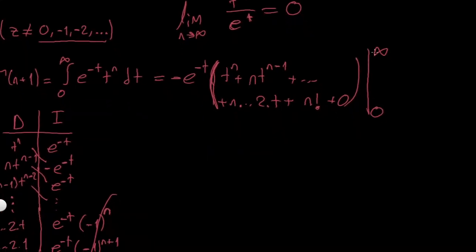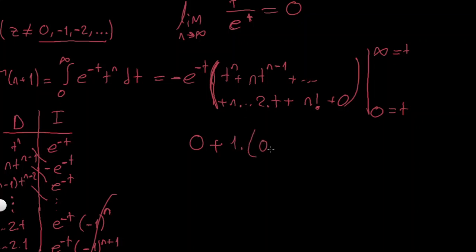If I put t = ∞, e^(-t) dominates all the polynomials so this gives 0. And if I put t = 0: from the fundamental theorem of calculus we get a minus sign canceling with the minus, so it's +e^0 = 1. Setting t = 0, all terms with a factor of t vanish — t^n, n*t^(n-1), ..., n*(n-1)*...*2*t are all 0. Only the last term n! survives, since it's just a constant.